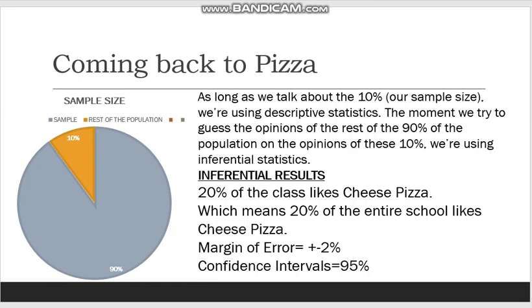Let's go back to your class. Let's say your class makes up about 10% of the entire school, the rest of the school makes up 90%, and together you make up 100%, which is basically the population in question. As long as we are talking solely about your class, the chosen 10% will be employing descriptive statistics. The moment we try to draw inferences about the entire population, we switch to inferential statistics.